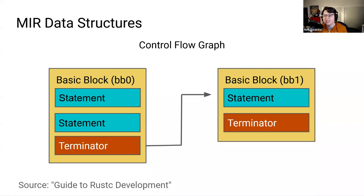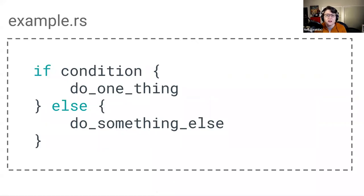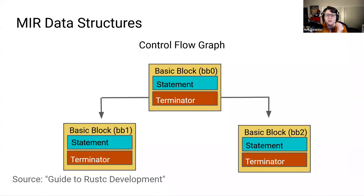This is a pretty simple example — there's only one direction that BB0 can go: it can only go to BB1. However, what if our code had an if-else statement in it? If we were to look at the MIR data structures for this, the terminator of BB0 would have the option to either proceed to BB1 or BB2, depending on the result of the if-else statement. In this case, there's more than one path that the program can take when it encounters the terminator in BB0.